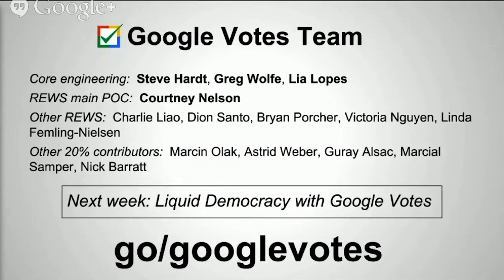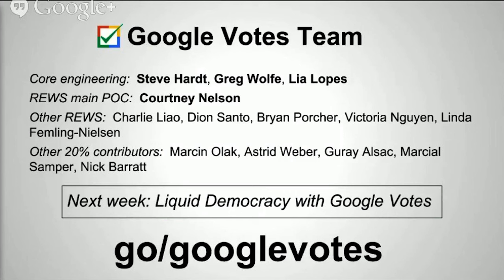Thanks to the Google Votes team. My co-lead is Greg Wolf in San Francisco. The other major engineering developer is Lea Lopez in Brazil, who did most of the UI work. Special thanks to Courtney Nelson from Workplace Services, who has been with us for two years coordinating numerous votes, setting things up, answering questions, and giving us customers. Thanks also to all other members of Workplace Services and contributors to code or UX design. Next week I'll be giving another talk purely about liquid democracy — delegated voting, what happens when votes flow through your social graph, both the user experience and the graph algorithms. Thank you for your time.